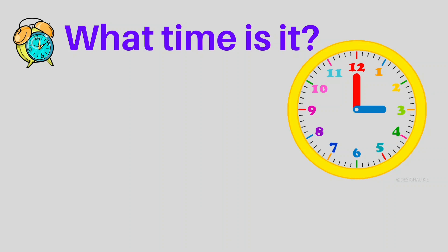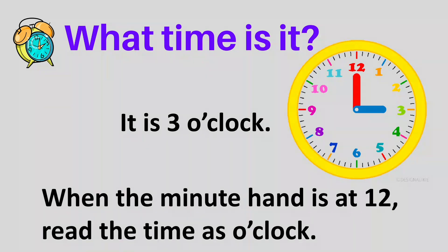Can you tell me the time? Yes, it's three o'clock. When you read the time, you first look at the short hand — that's the hour hand — and it's pointing at three. Next, the minute hand is pointing at twelve. We don't say three twelve. When the minute hand is at twelve, read the time as o'clock.